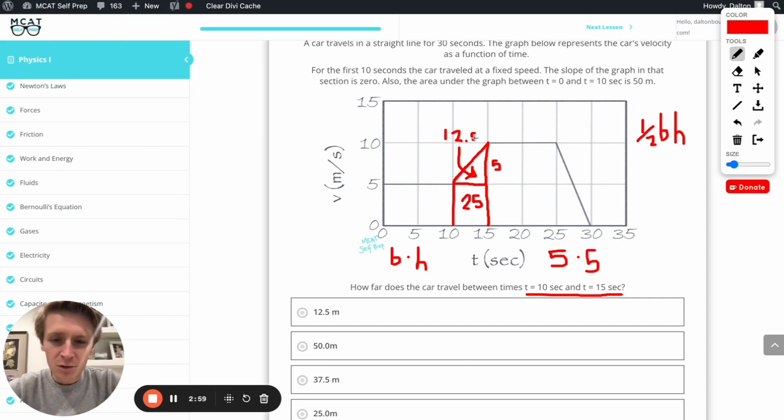To add them up, 12.5 plus 25, that's going to get us our final answer, 37.5.